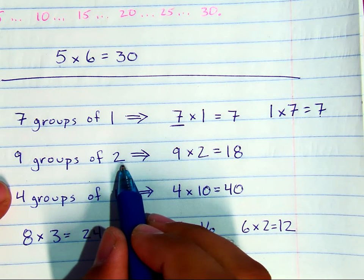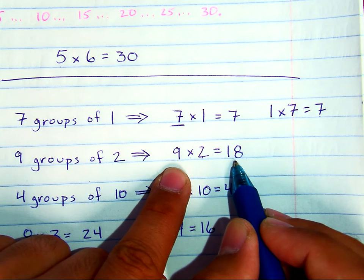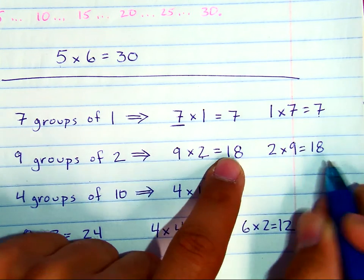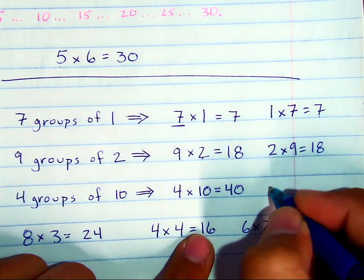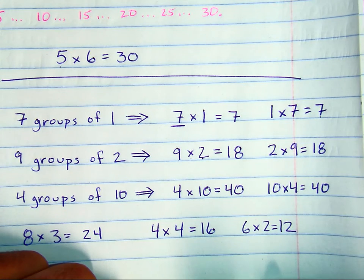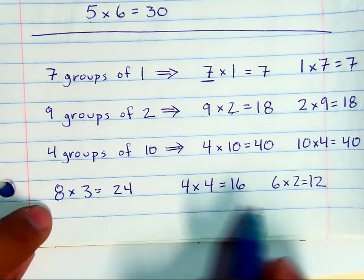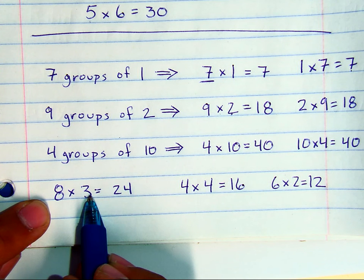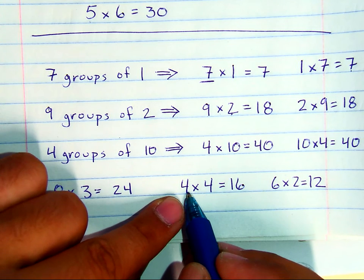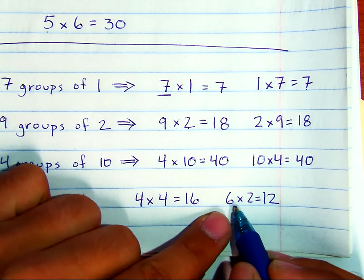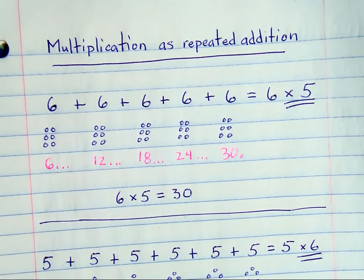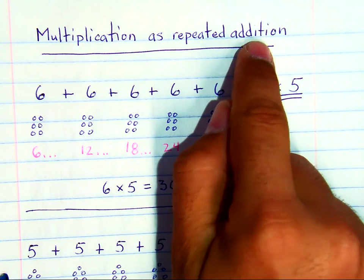So 9 groups of 2 can be 9 times 2, and as long as you know that's 18 whether it's 2 groups of 9 or 9 groups of 2, you're still grouping the same total. 4 groups of 10 can be 4 times 10 or 10 times 4, because you're still grouping 40 either way. Eventually, when you see a multiplication problem like 8 times 3, you'll memorize that it's 24, or 4 times 4 is 16, or 6 times 2 is 12 — you'll memorize all the different ways you can group large numbers. That's multiplication as repeated addition, and that's what we're practicing now.